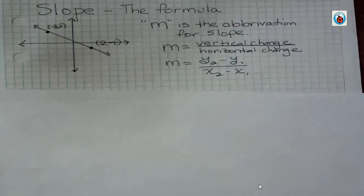I'm talking about the formula that you can use to find slope. We looked in the last video at some examples where we counted from one point to the other and we found the rise and the run.